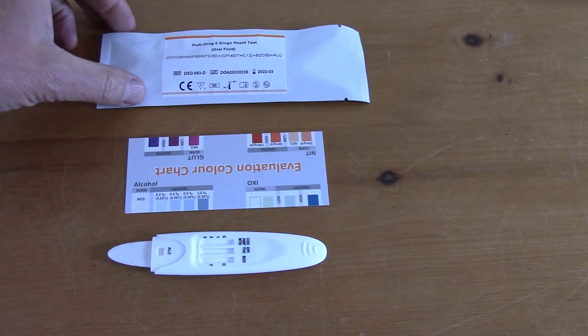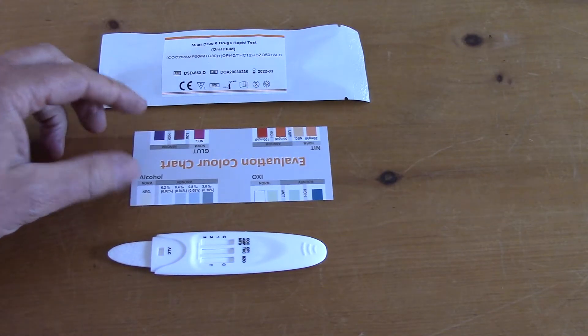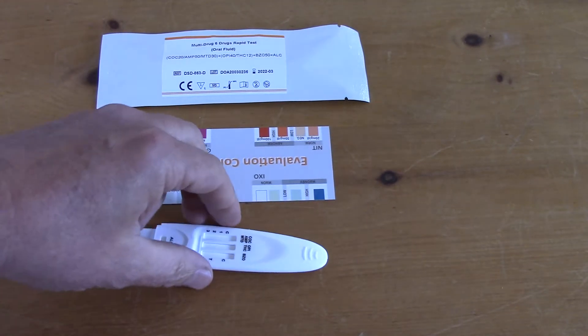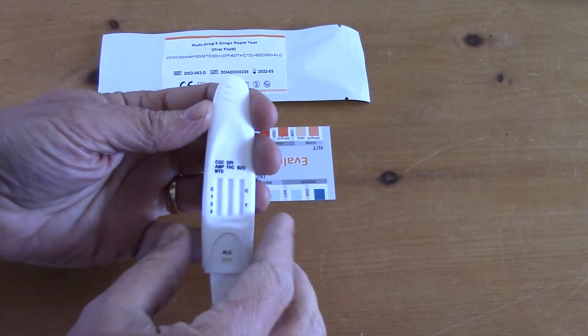This is what you get in the foil. There's the foil as we showed you before, the colored card for the alcohol, and this is the new design test cassette.